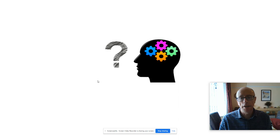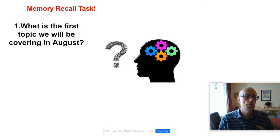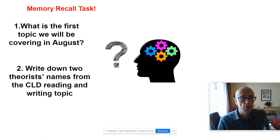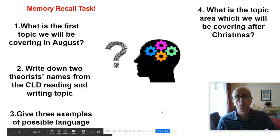Here's a bit of a test — five questions. Number one: what is the first topic we will be covering in August? Number two: write down two theorists' names from the CLD reading and writing topic. Three: give three possible examples of language investigations. Number four: what's the topic area which we'll be covering after Christmas? And finally: apart from eating fish and chips, what happens on a Friday? Pause the video and write your answers.